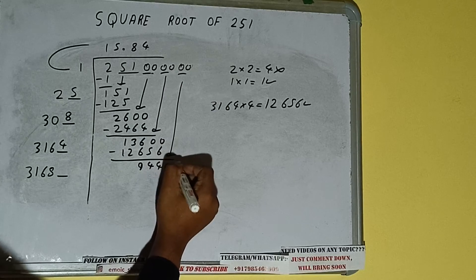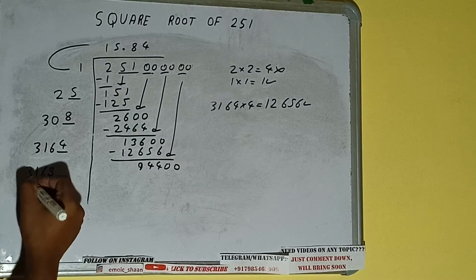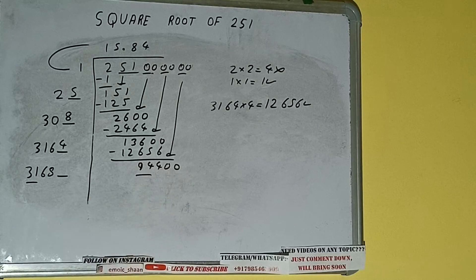So bring the next pair of zeros down and it will be 94400. Now compare this 31 with this 94. So 31 three times is 93.